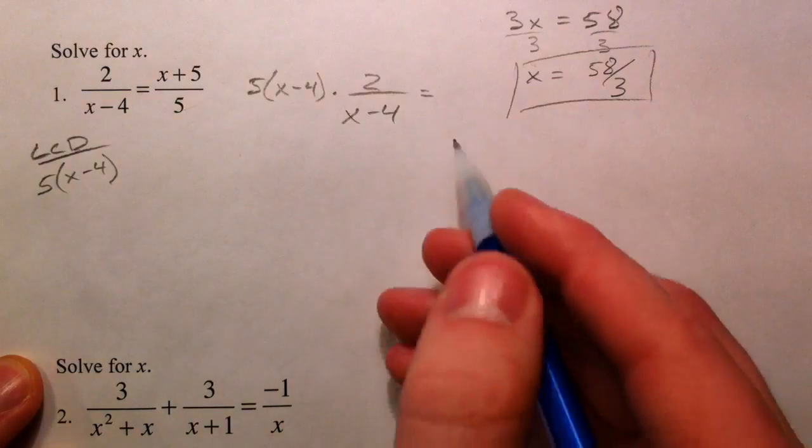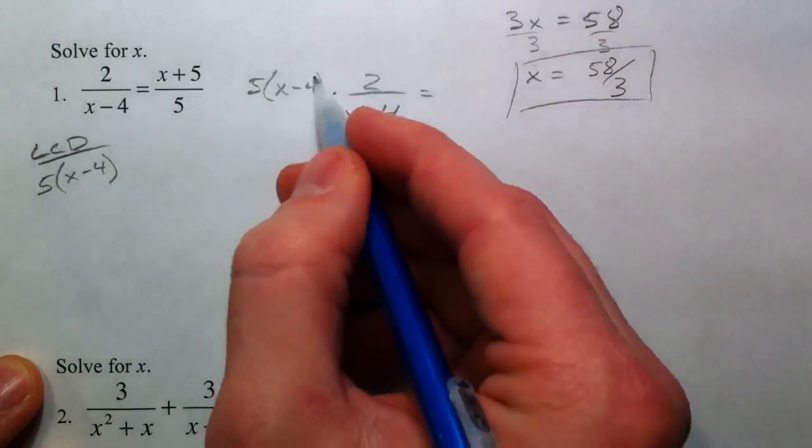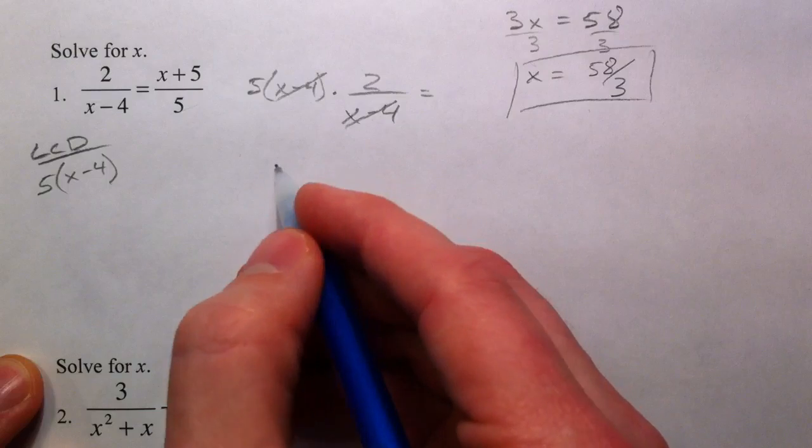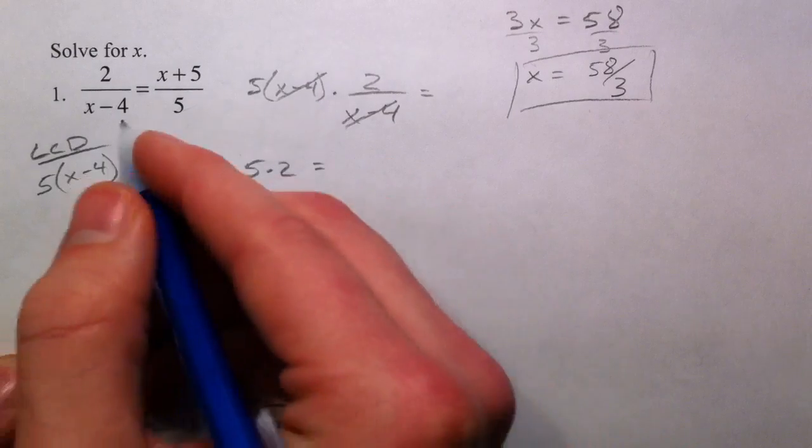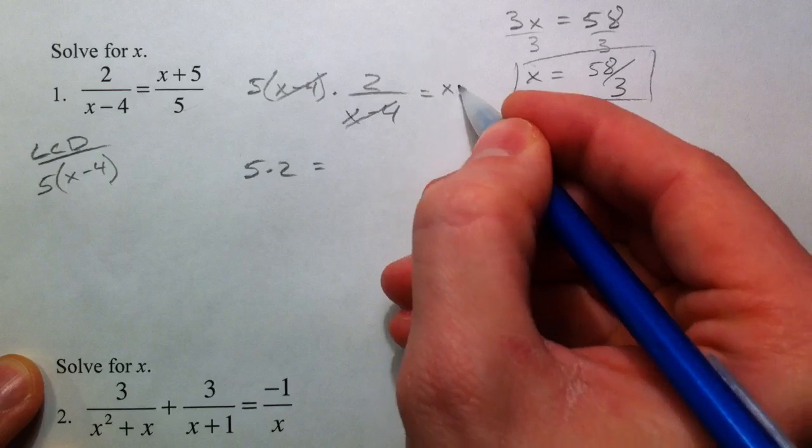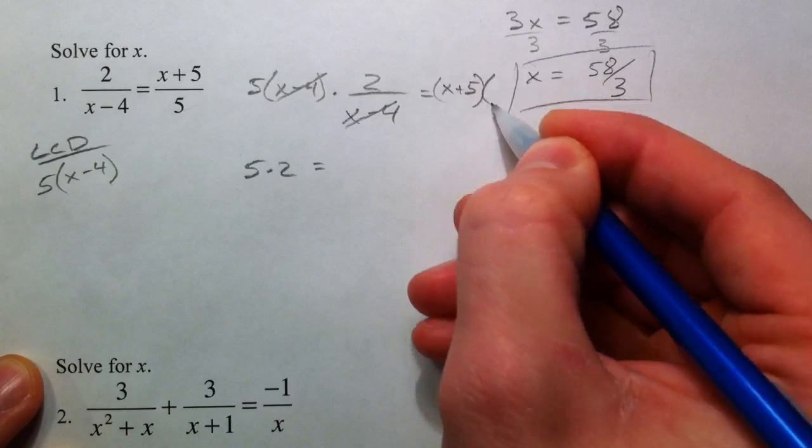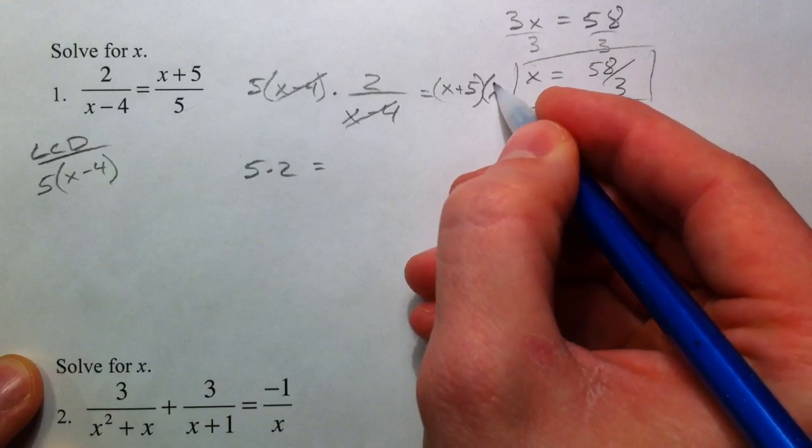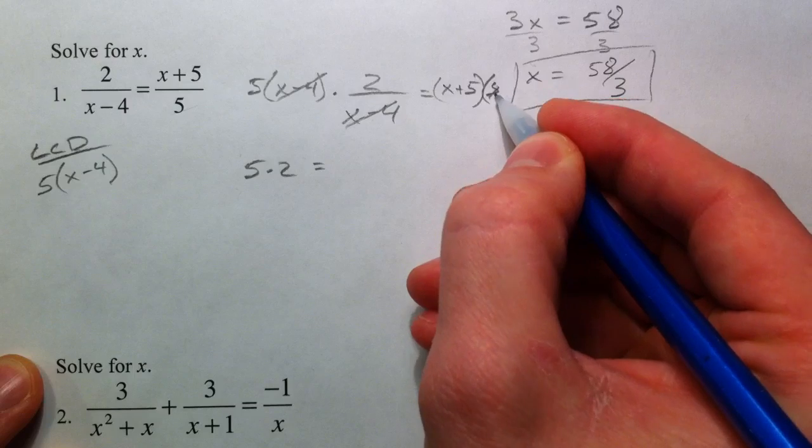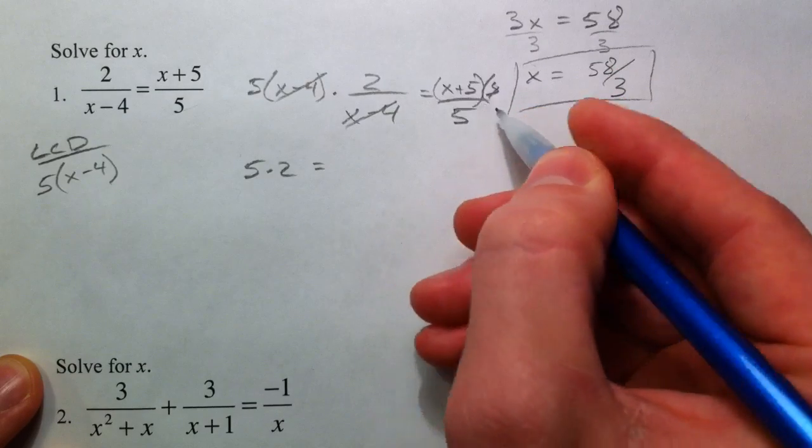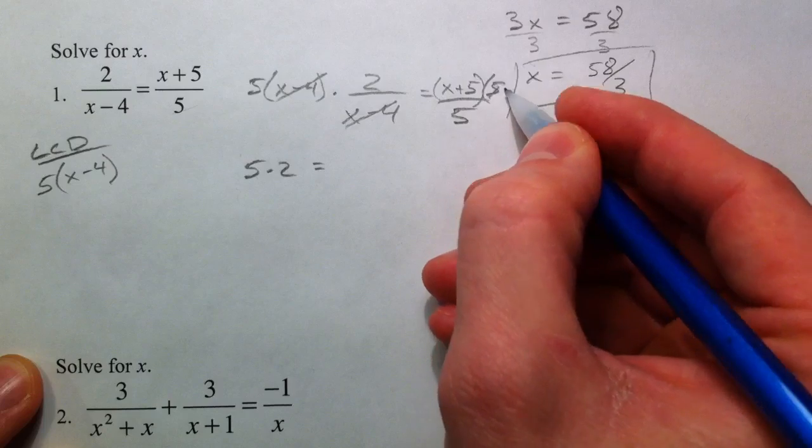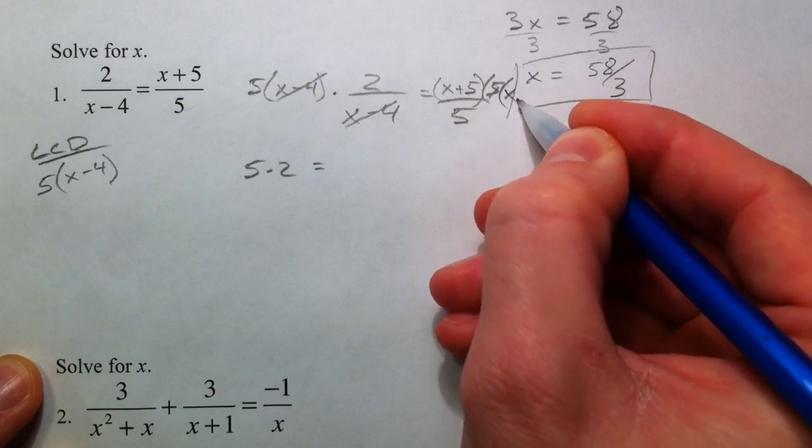5 times x minus 4 times the left, which is 2 over x minus 4, and you can already see the whole reason we're doing that is so that this x minus 4 will cancel out, so you'll just get 5 times 2. On the other side you get x plus 5 over 5 times the lowest common denominator, that was 5 times x minus 4.